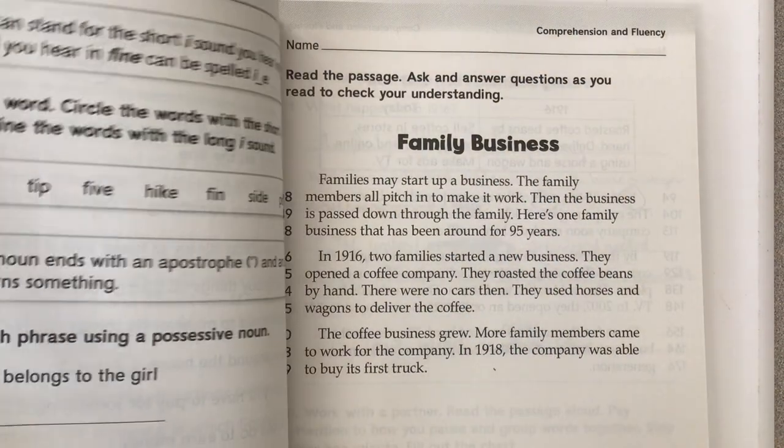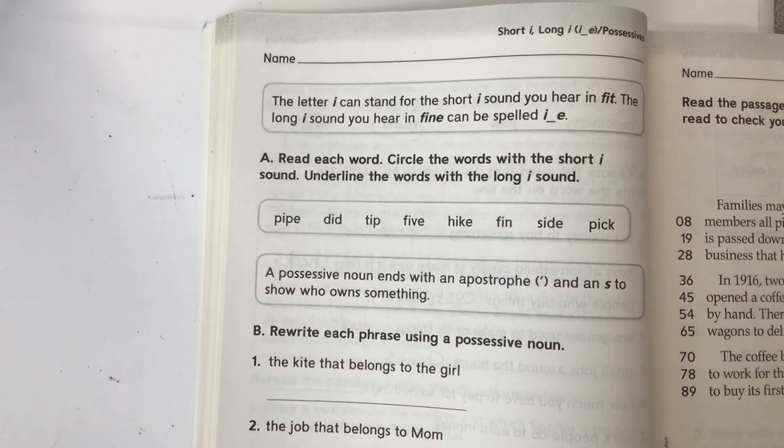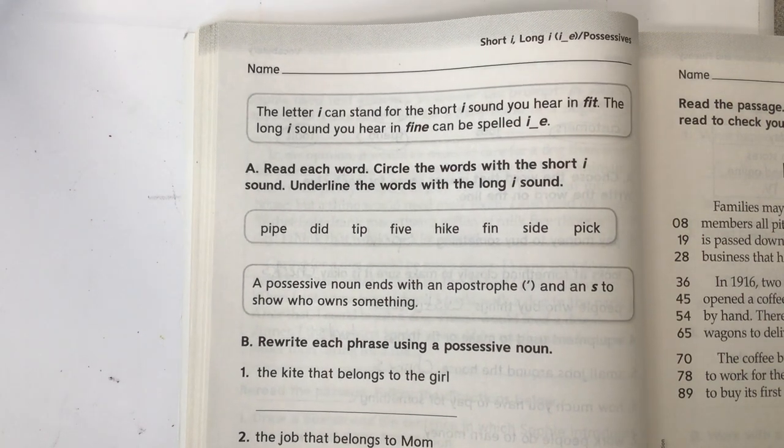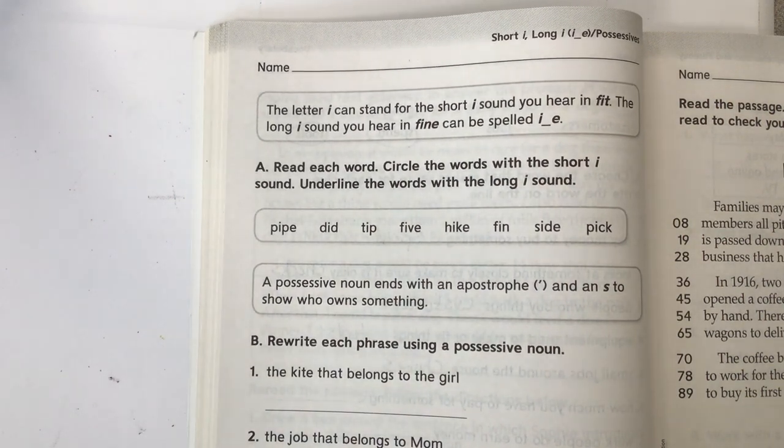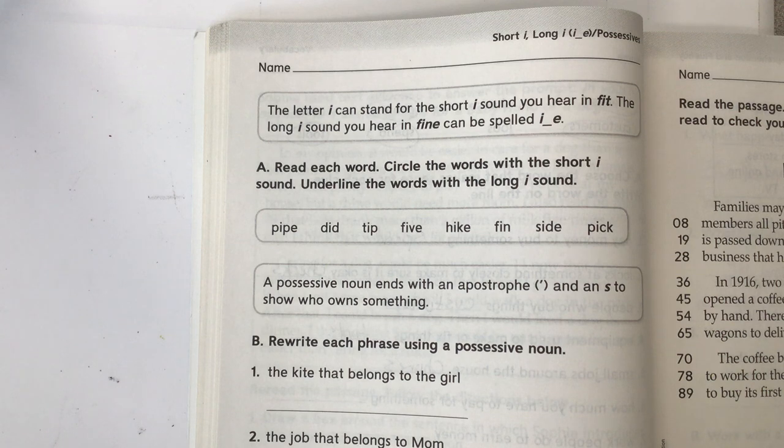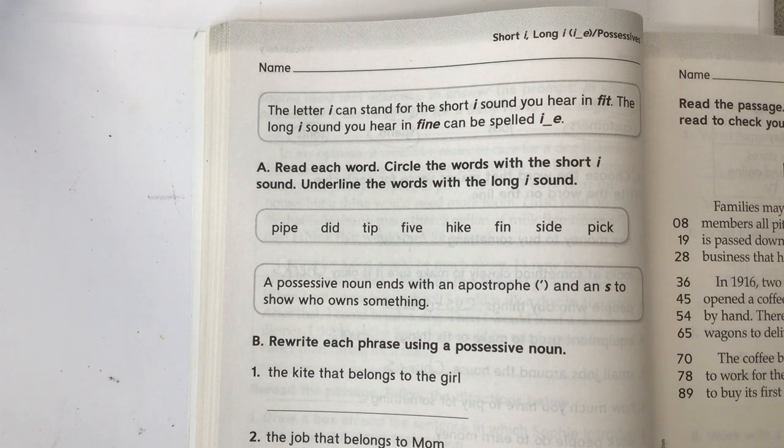The second grade your turn practice book. We will be working on page 42, spelling and possessives. The letter I can stand for the short I sound you hear in fit, and the long I sound you could hear in fine. You spell that I, then a consonant, and then E.